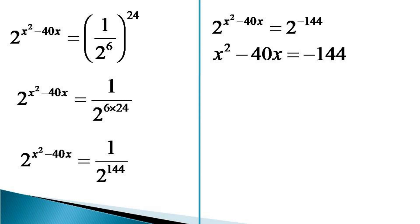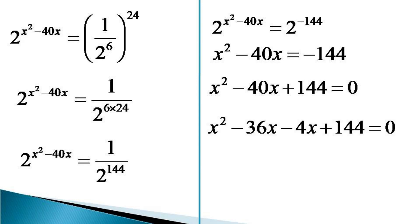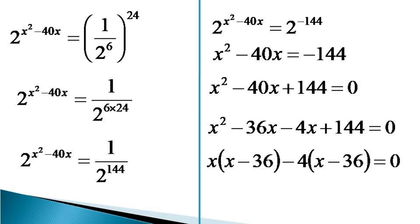This condition gives us x squared minus 40x equals minus 144. Bringing all terms to the left hand side gives the quadratic equation x squared minus 40x plus 144 equals 0. Factorizing, this is expressed as x squared minus 36x minus 4x plus 144 equals 0. Taking x common from the first two terms and minus 4 common from the last two terms gives x(x minus 36) minus 4(x minus 36) equals 0.